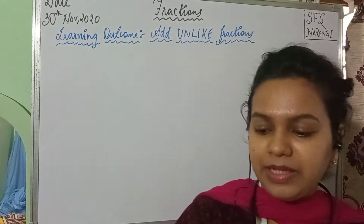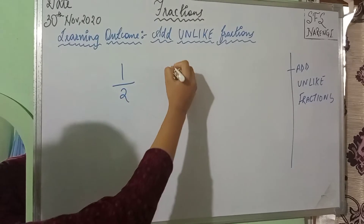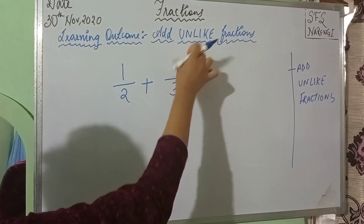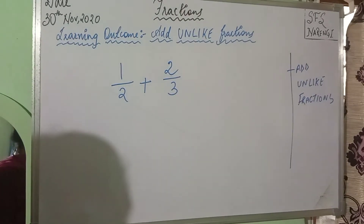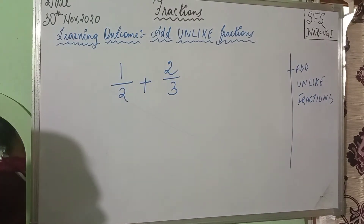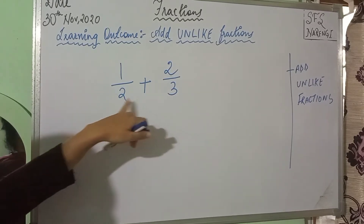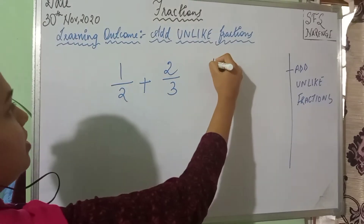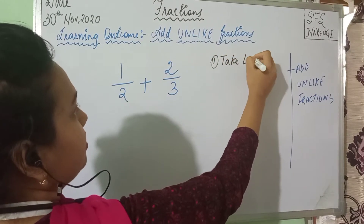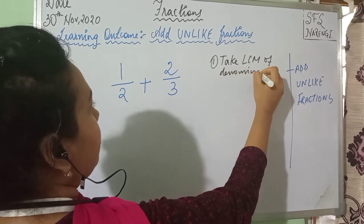For example, let me take two unlike fractions: 1 by 2 and 2 by 3, and I have to add them. So, what is the first step that I will do? Just like comparing fractions, to add unlike fractions, because the denominator is not the same, my first step is to take LCM of the denominator.